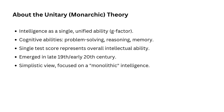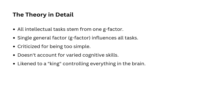This theory was one of the first to appear in the late 19th and early 20th centuries, when researchers were still figuring out how to measure intelligence. At that time, the idea was that a single test score, like an IQ test, could represent a person's overall intellectual ability. According to the unitary theory, all types of intellectual activities come from a single G-factor, or general intelligence. No matter what kind of tasks you are performing — whether it's solving a math problem or remembering a list of words — your performance is determined by this one overarching ability.